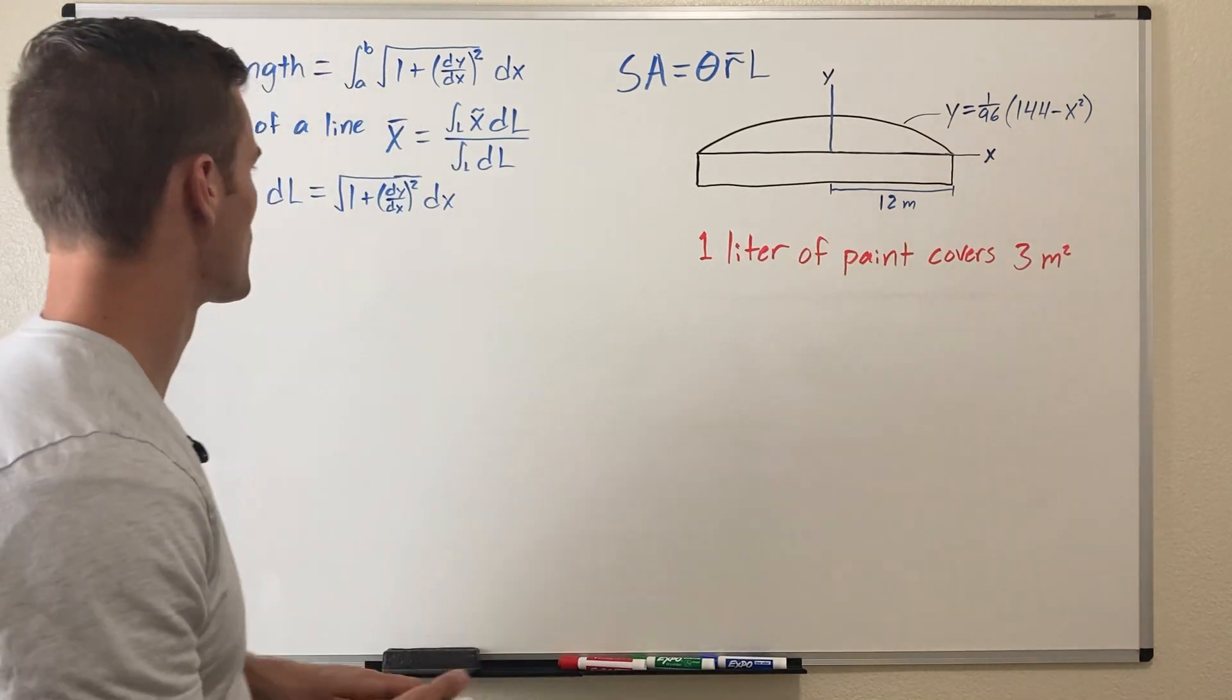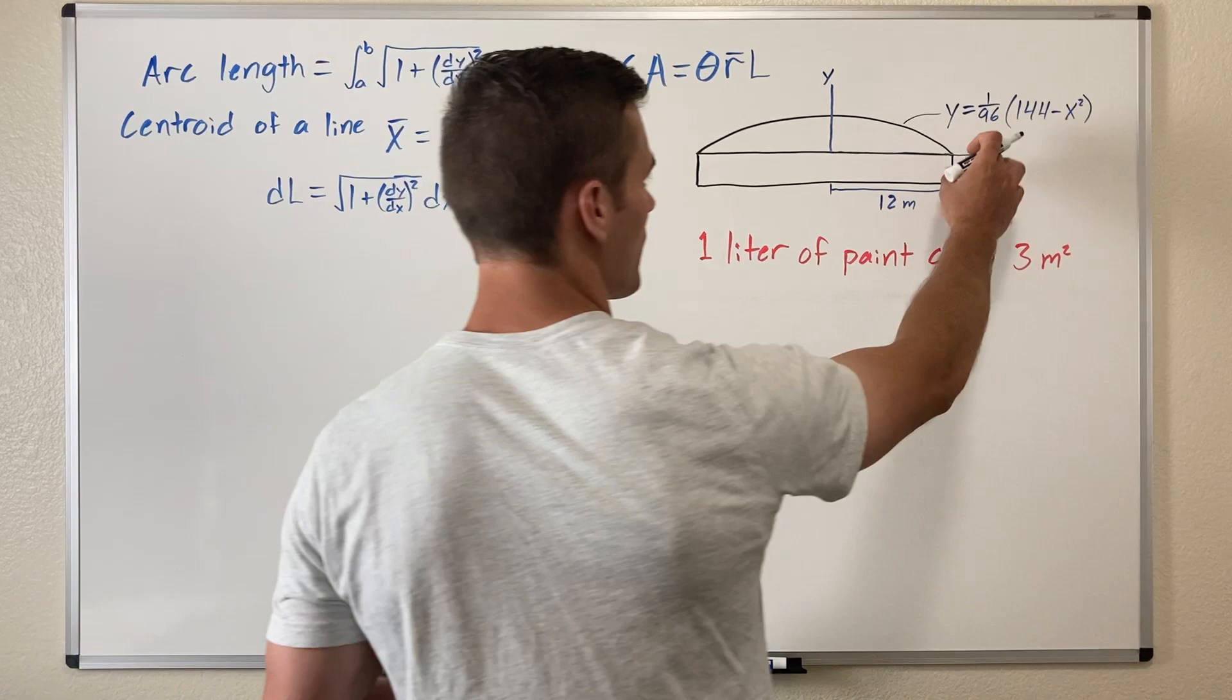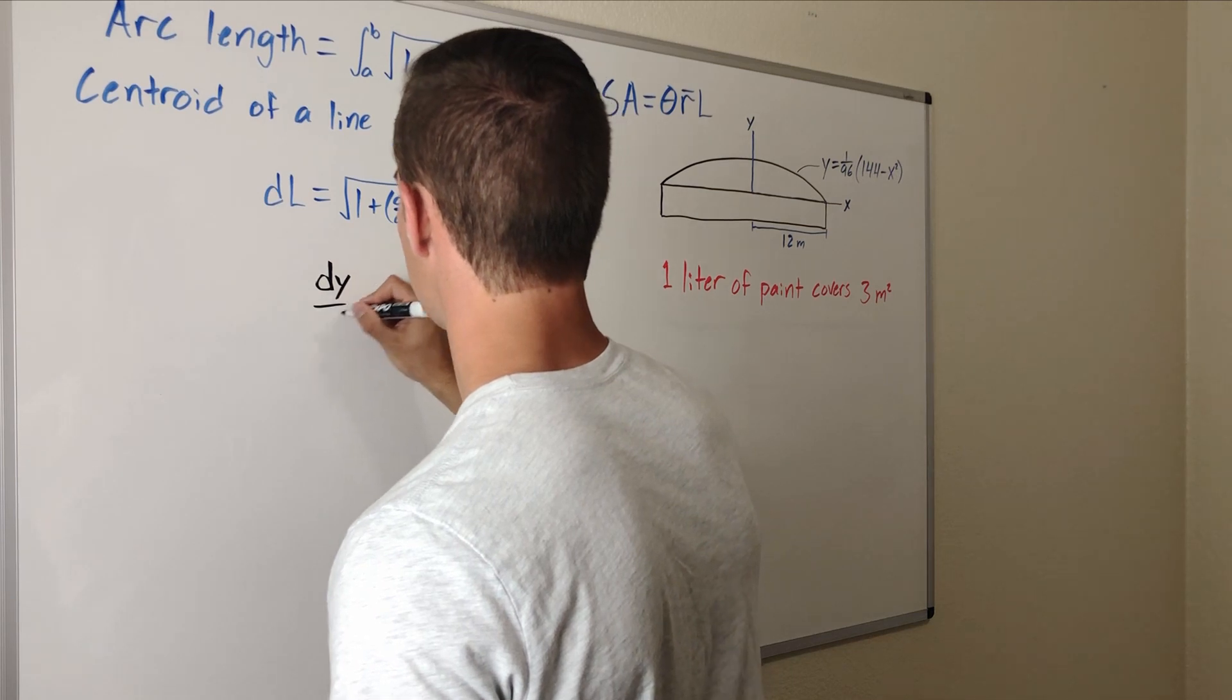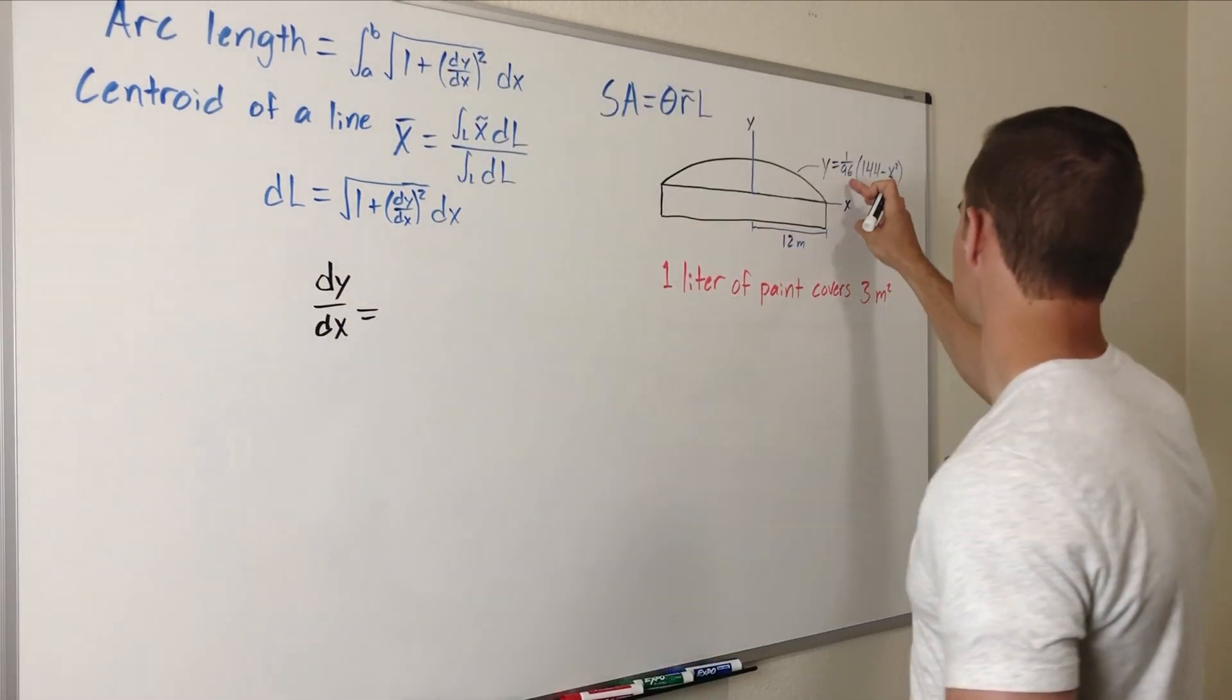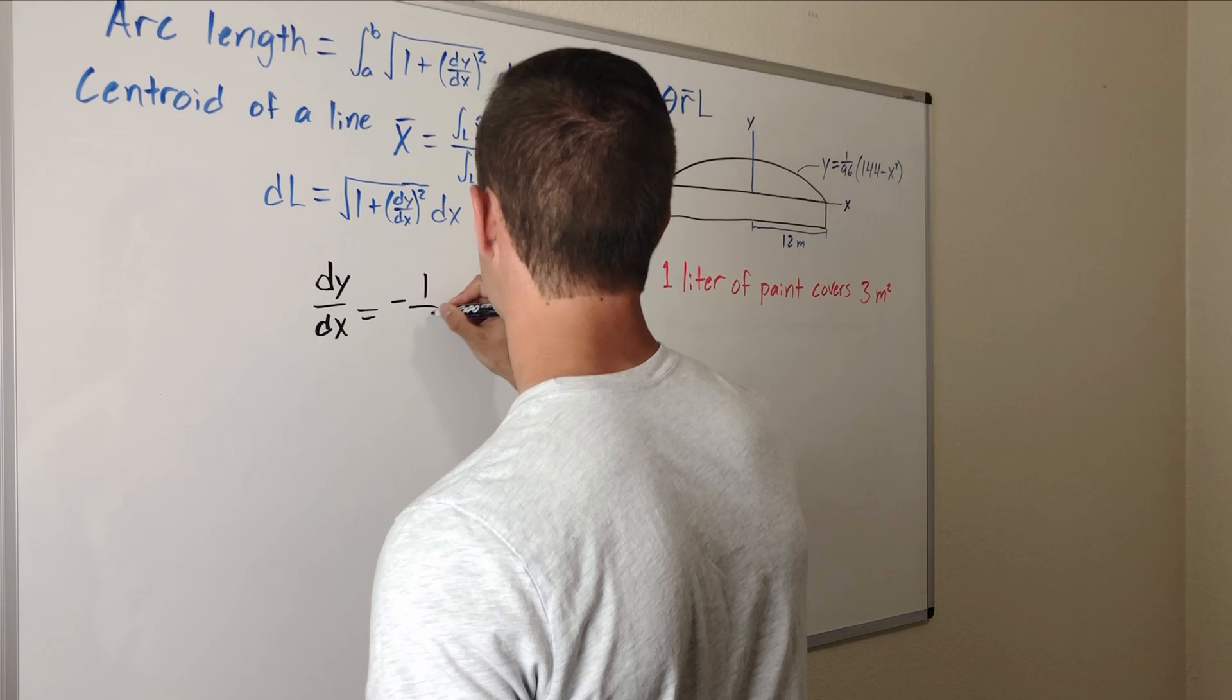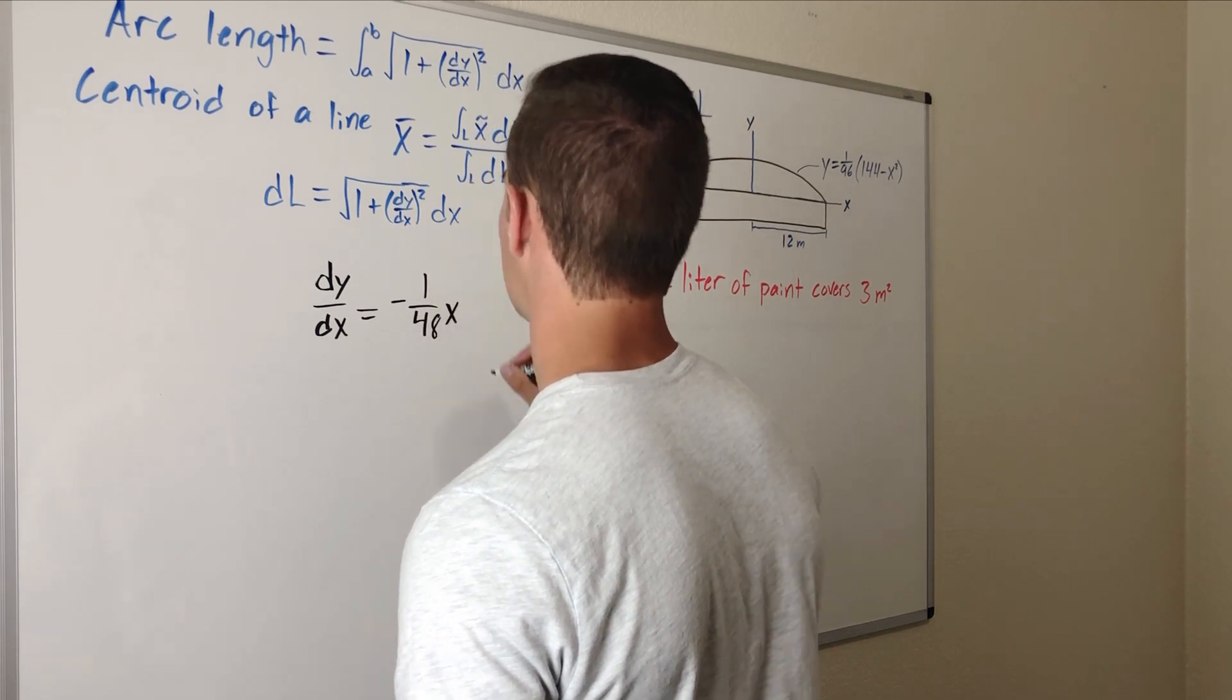Doing that, we first need to find dy/dx which is just the derivative of this equation right here. So taking the derivative of that, we have that dy/dx equals, this part is just a constant and so the derivative of this part would just be 1 over 48x.